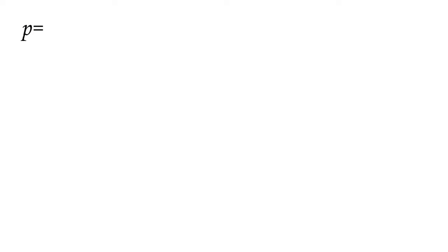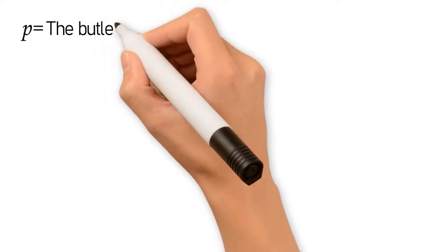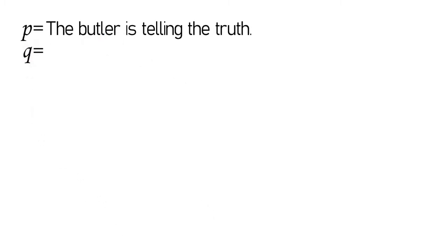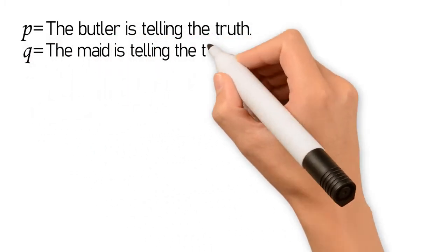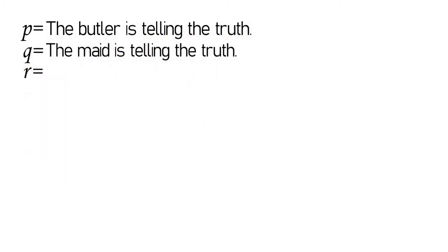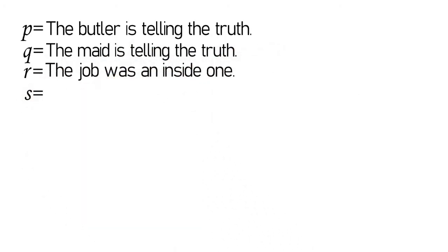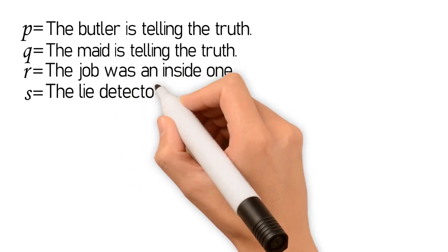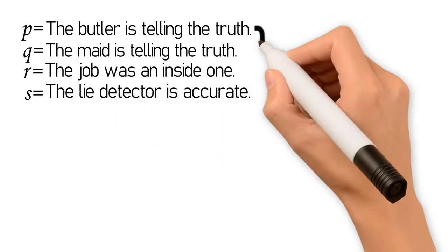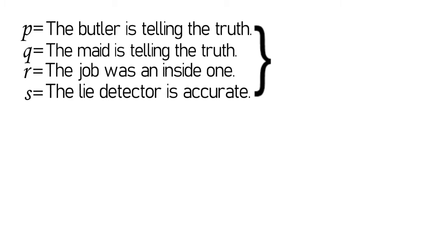So, if we let P stand for the butler is telling the truth, Q for the maid is telling the truth, R for the job was an inside one, and S for the lie detector is accurate, then we initially come up with the following symbol.